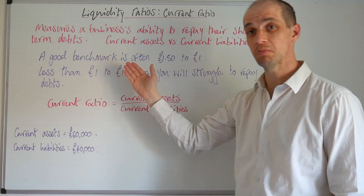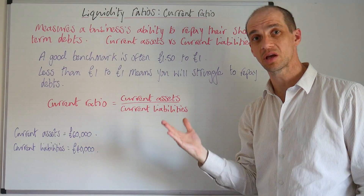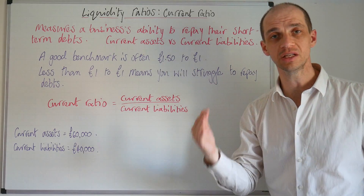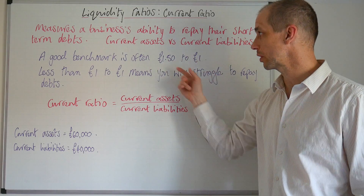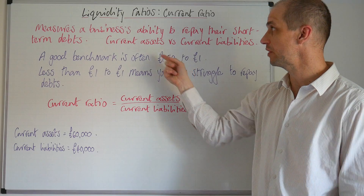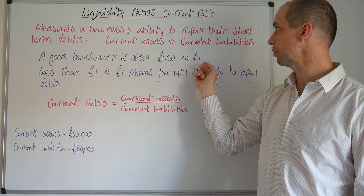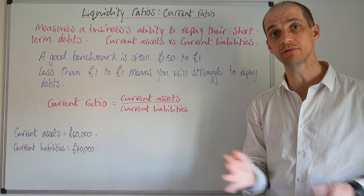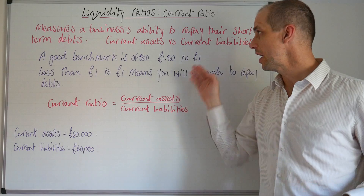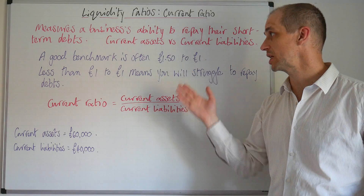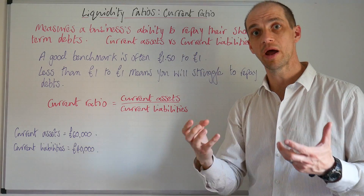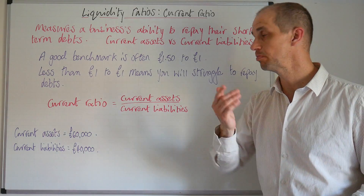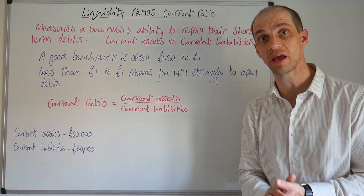A good benchmark to aim for when it comes to the current ratio is often around the £1.50 to £1 mark — so where you have £1.50 of current assets and £1 worth of current liabilities. That may range up to possibly £2, but not beyond there. Anything beyond there would suggest that you've got too much in the way of liquid assets and you should be using that money more productively elsewhere.